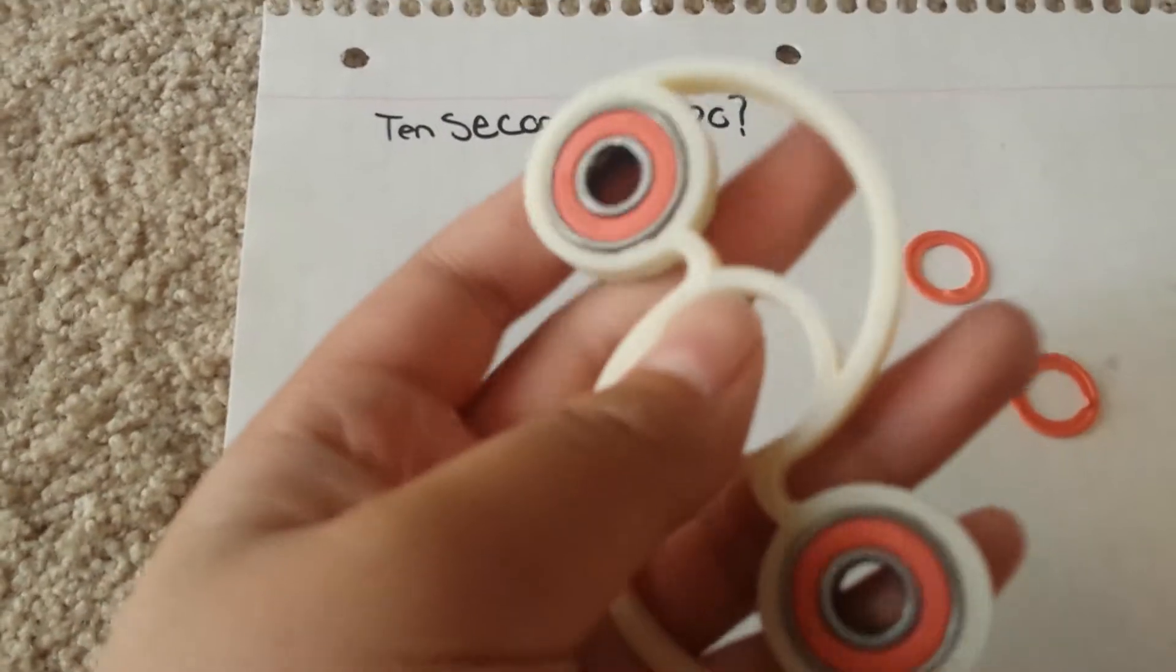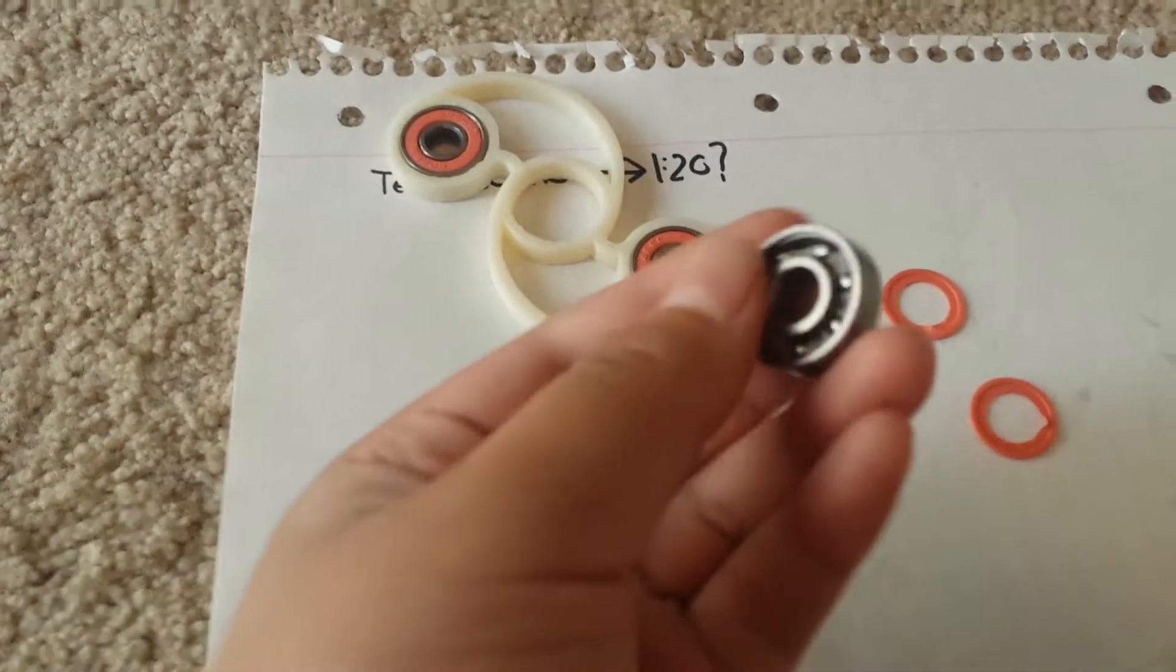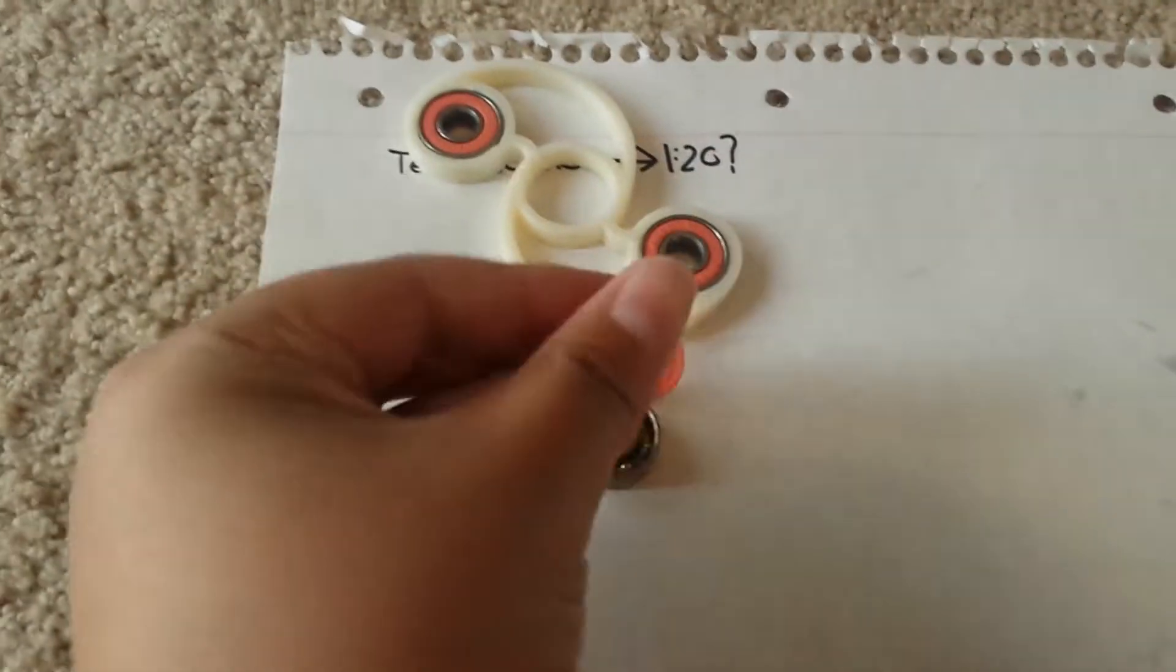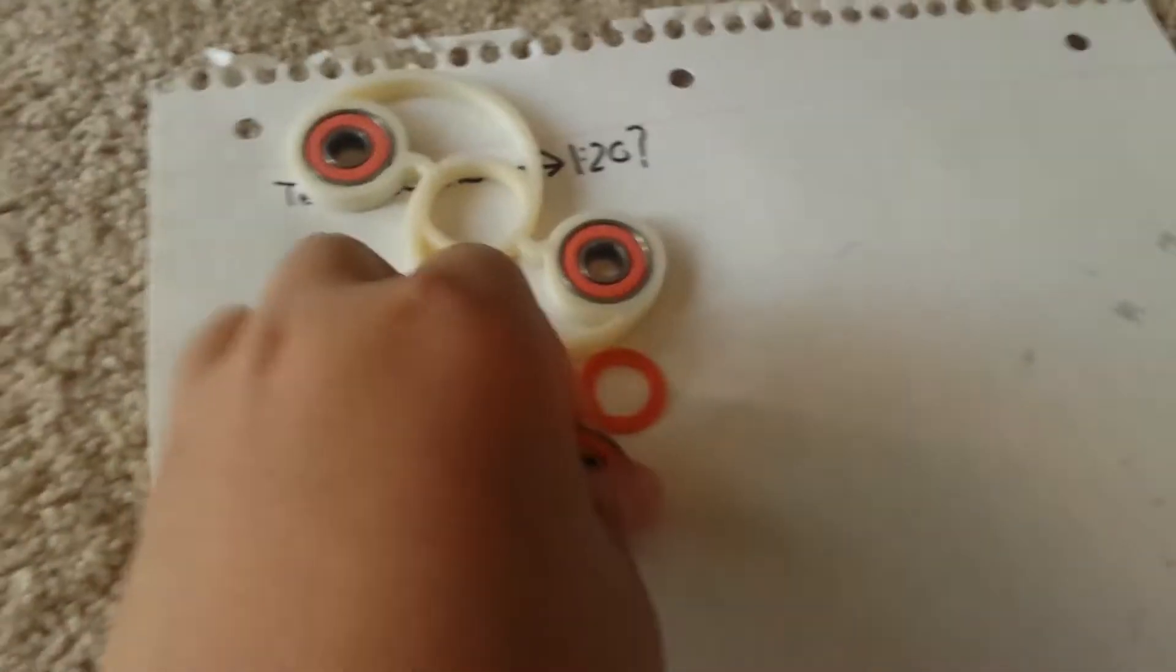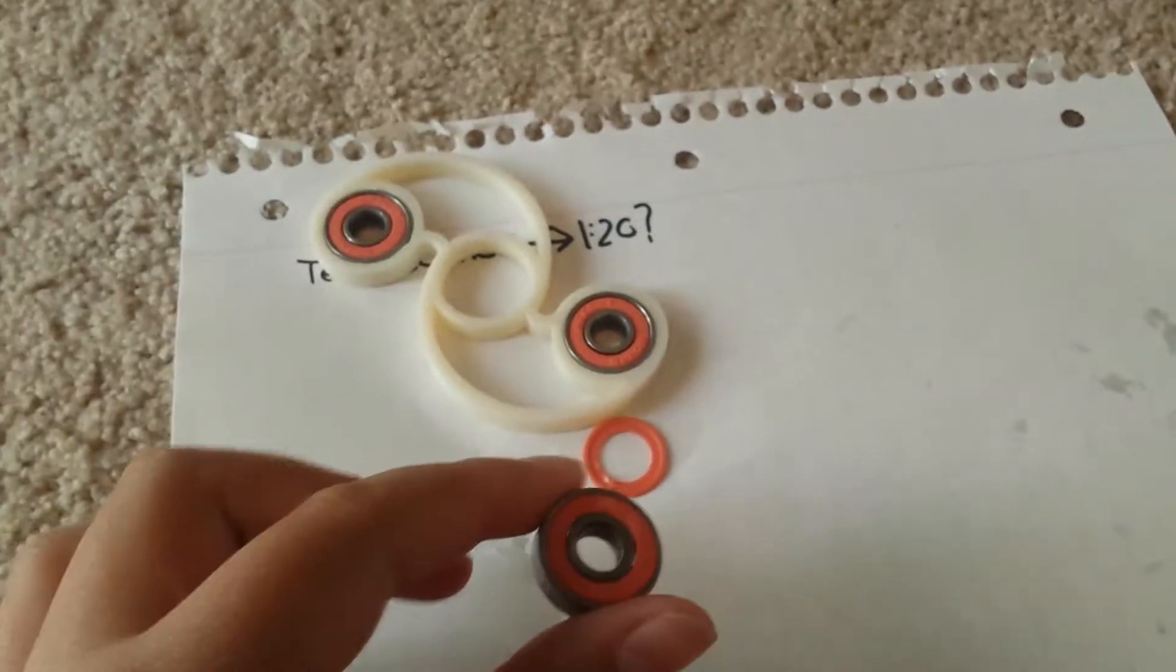You have your average bearings, outers. This is an outer bearing. You can tell by the ABIC logos. Let me click that in there and use a piece of paper, because you don't have the recording.